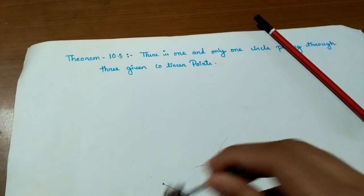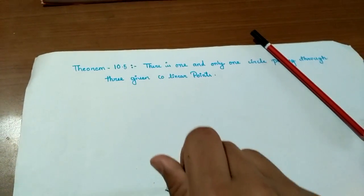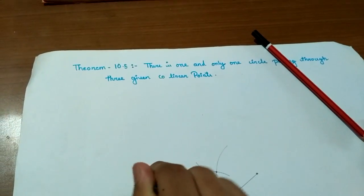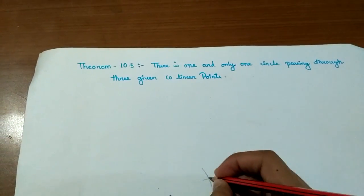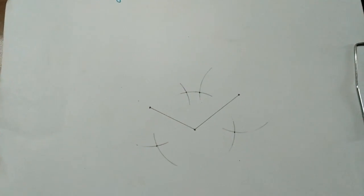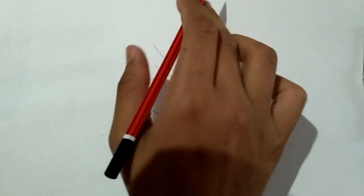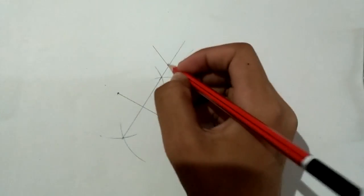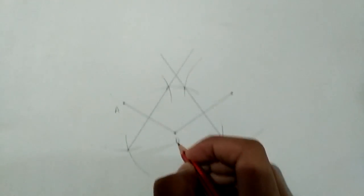Now, using the scale, join these two lines. You can see I have joined and extended these two lines. I'm marking the points here as A, B, and C.